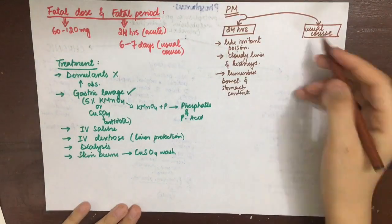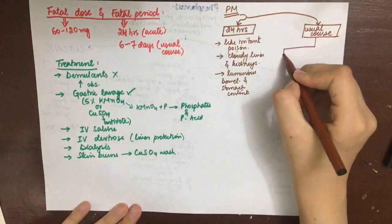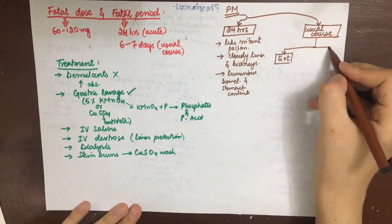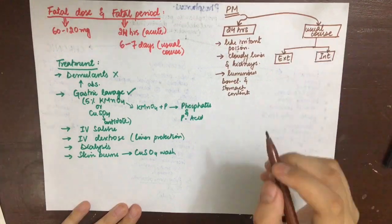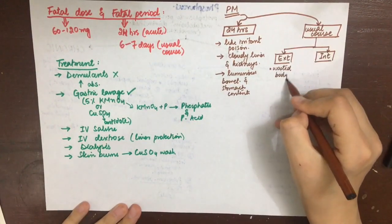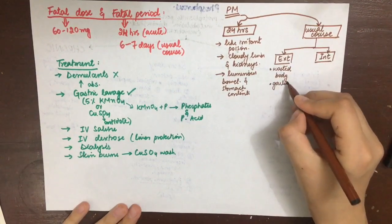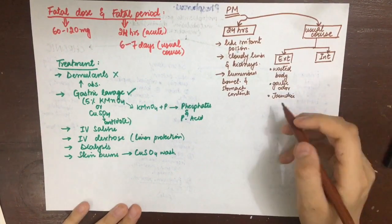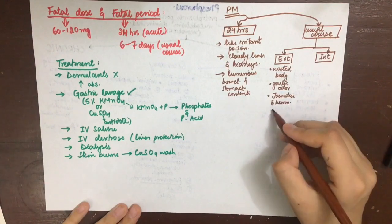In the usual course there are external body findings and findings on dissection. Externally, the body is wasted, garlic-like odor is observed, and jaundice and hemorrhage can be seen from the skin and various natural orifices.